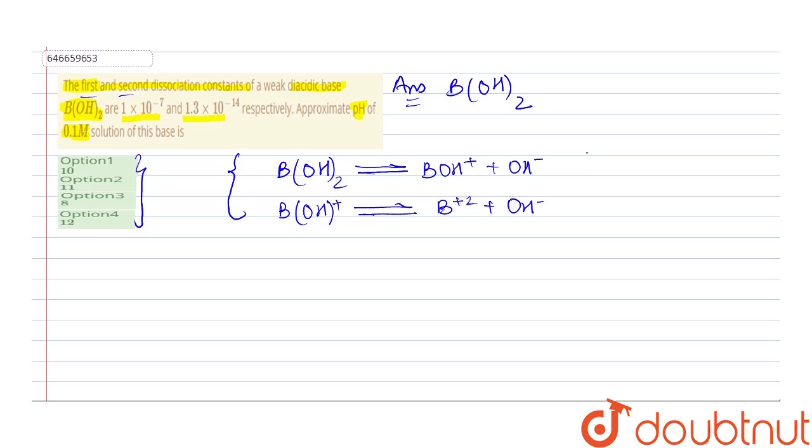Now if we assign the values: this is K₁, the first dissociation constant, which is 1×10⁻⁷, and this is K₂, the second dissociation constant, also known as Kb1 or Kb2, given as 1.3×10⁻¹⁴.